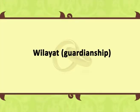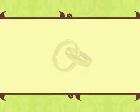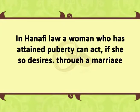Vilayat i.e. guardianship: as regards those who are not competent to contract their own marriage, ijab or kabul, as the case may be, is to be made by their marriage guardians i.e. wali. In Shafi and Ismaili laws of marriage, the guardian is also to act on behalf of a girl who has attained puberty, unless it is not her first marriage. In Hanafi law, a woman who has attained puberty can act, if she so desires, through a marriage guardian.